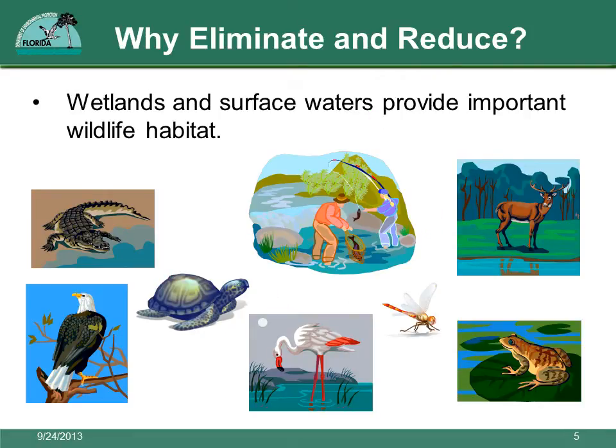Wetlands and other surface waters provide spawning grounds, nesting areas, rich food sources, and drinking water for many kinds of animals and plants. Some of these plants and animals are directly important to our human economy and recreation. Some of the animals and plants that live in or depend on wetlands and other surface waters are endangered or threatened. Many others are food sources for economically important species.